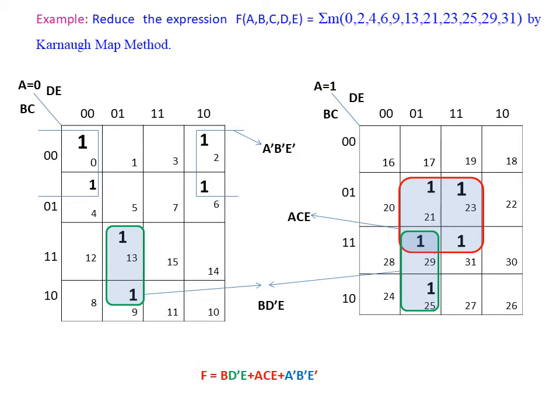Now we are going to reduce the expression F by using the 5-variable K-map. For that, first we draw the two 4-variable K-maps, then we place the 1s into the corresponding cells, and then we try to group them.